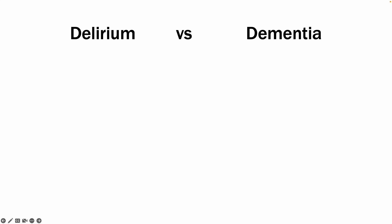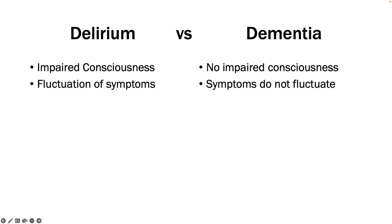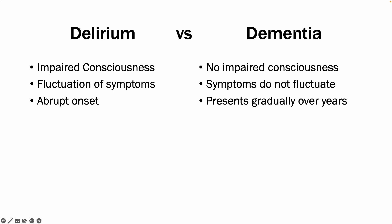In terms of differentiating delirium from dementia: delirium has impaired consciousness, where there is none in dementia. Symptoms fluctuate in delirium, whereas they tend not to fluctuate in dementia. The onset is much more abrupt compared to dementia, which typically presents over months or years. And importantly, delirium is reversible, whereas dementia is not.